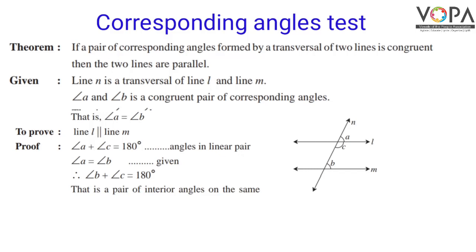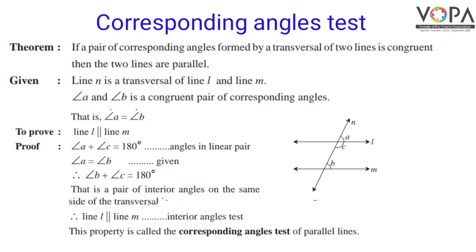In the proof, angle A plus angle C equals 180 degrees — angles in a linear pair. Since angle A equals angle B, we substitute to get angle B plus angle C equals 180 degrees. These are a pair of interior angles on the same side of the transversal, so by the interior angles test, line L is parallel to line M. This property is called the corresponding angles test of parallel lines: if corresponding angles are equal, then the lines are parallel.